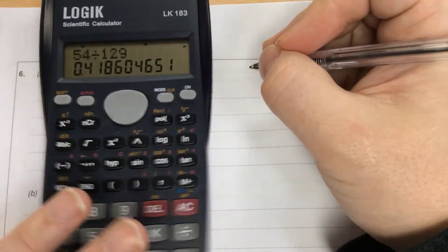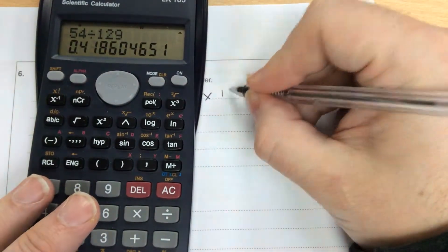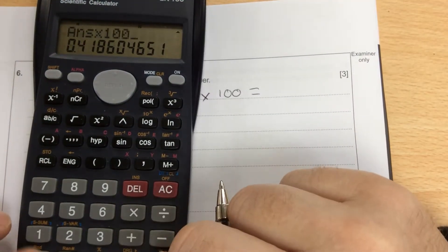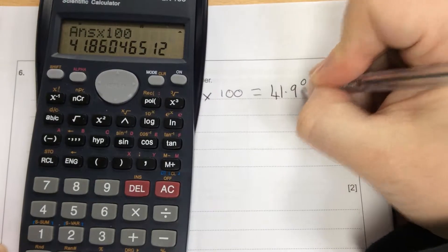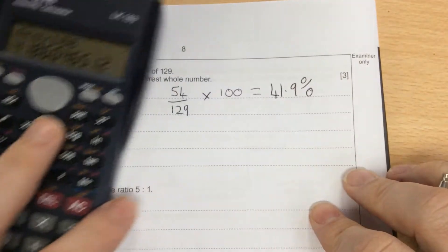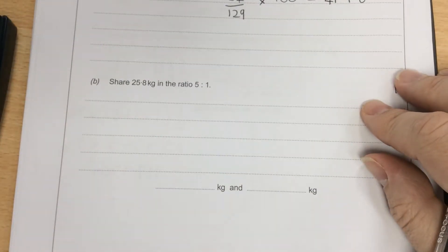and then that comes up as a decimal. To change to a percentage, I multiply by 100. So when I times by 100, the answer to that becomes 41.9%. Part B,